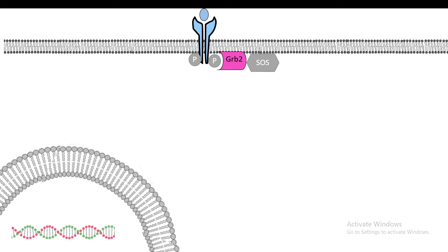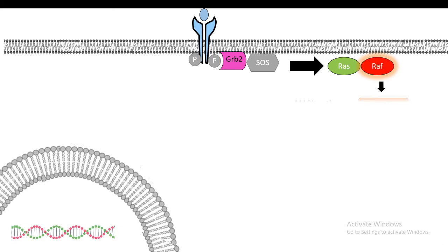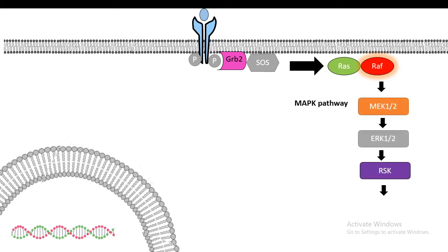SOS activates RAS, a small monomeric GTP protein. Upon activation of RAS, RAS allows activation of several kinases such as MAP triple kinase—one example is RAF. In subsequent steps, there is a kinase cascade.